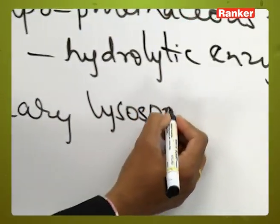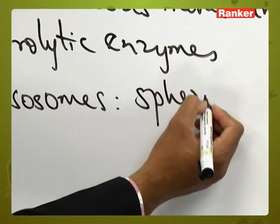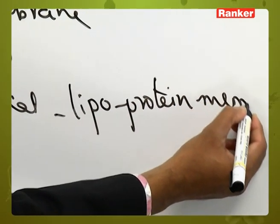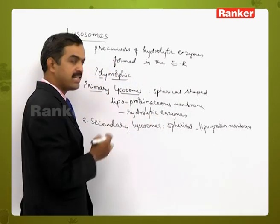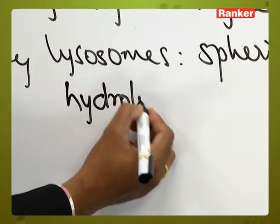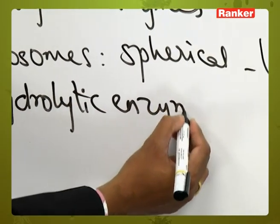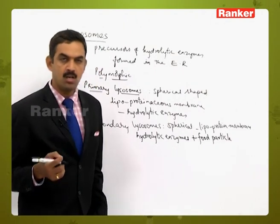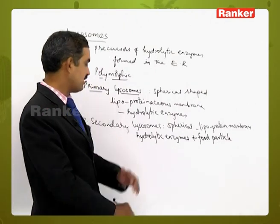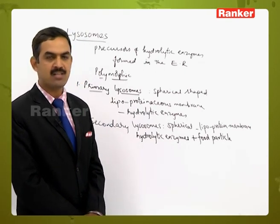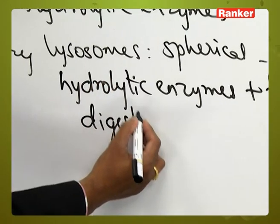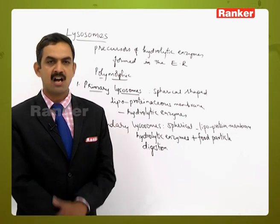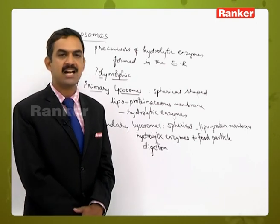Secondary lysosomes are also spherical-shaped structures with a lipoproteinaceous membrane and hydrolytic enzymes, along with food particles or foreign particles that have entered the lysosome to be digested. Once a food or foreign particle enters, that structure is called a secondary lysosome, and the digestion of that material begins — the activity of the hydrolytic enzymes starts on the food particle, which is gradually digested.